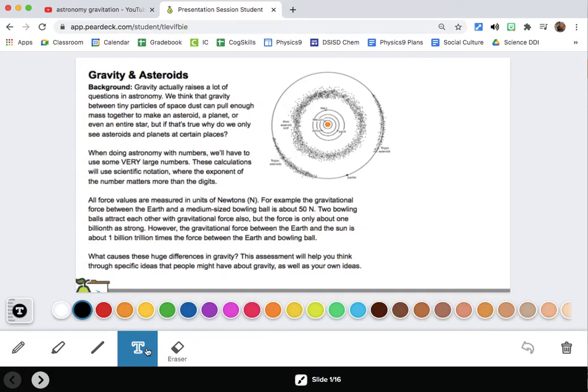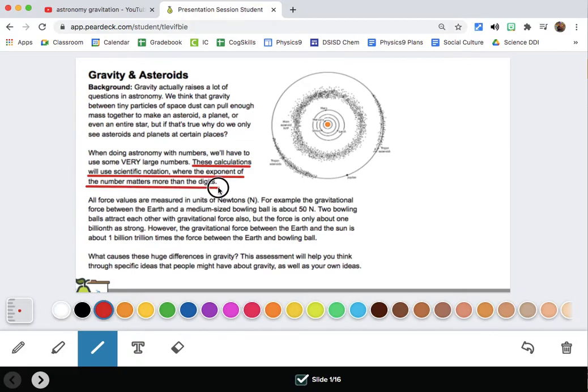That's fascinating but not really what we're going to be talking about here. We're going to be focused on doing calculations, and in particular we're going to be paying attention to this. These calculations will use scientific notation where the exponent of the number matters more than the digits. Basically the exponent is the difference between 10 and 100. 10 is way different from 100, so the difference between 10 and 35 is not nearly as important as the difference between 10, 100, or 1000.